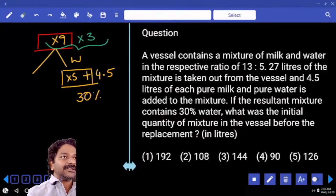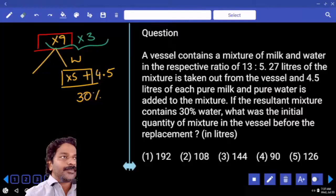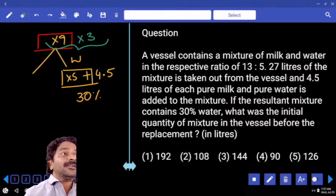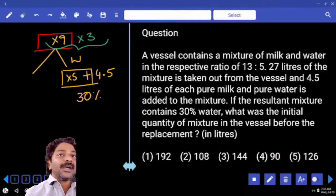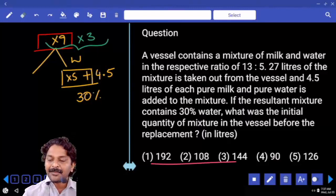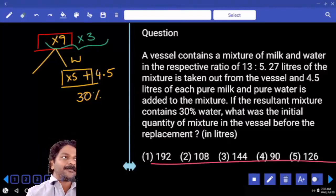Can you tell me 27 multiples? 27, next? 54. Next? 81. Next? 108. Next? 135. Do you have 135? So among your 5 options how many 27 multiples are there? Only 108, final answer.